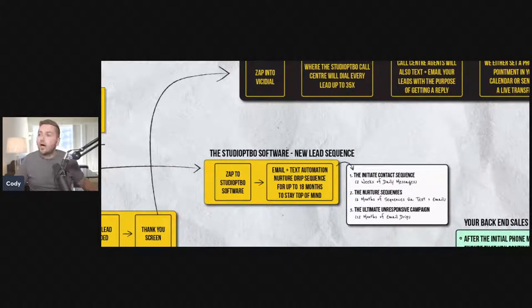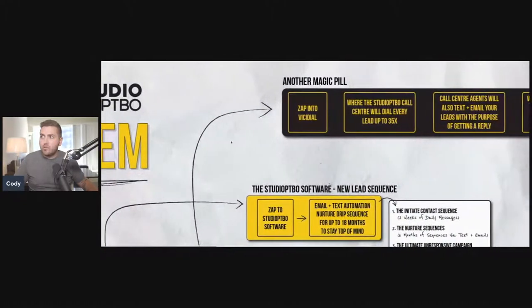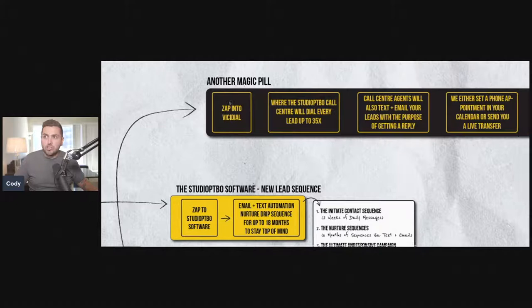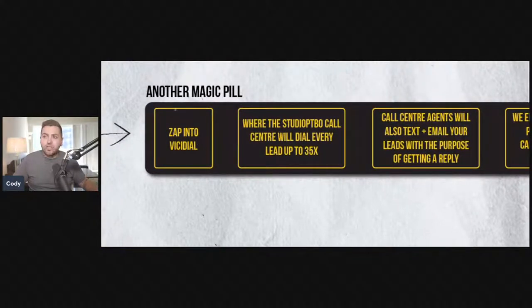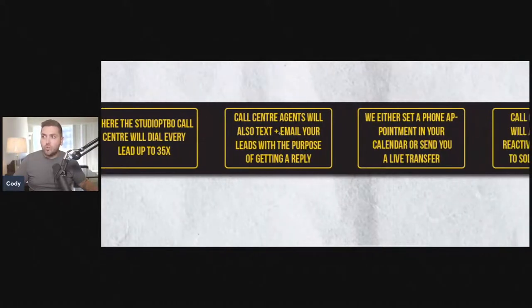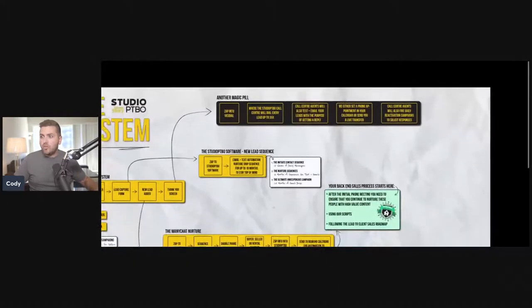After the lead is generated, we take them through another magic pill. Not only is automation booking appointments for you, we have a call center that zaps them into a program called Vici Dial. Studio PTBO is going to call every lead up to 35 times. The call center agents will also text and email your leads with the purpose of getting a reply. We're either going to book an appointment or a live transfer. The call center agents will also fire daily reactivation campaigns.